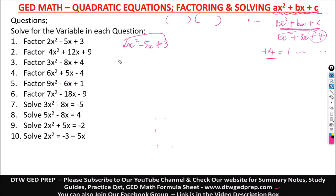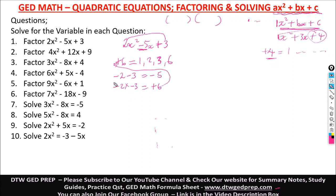The factors of positive 6 are 1, 2, 3, and 6. We need two numbers that when added or subtracted give us negative 5. We can use negative 2 and negative 3 — that gives us negative 5. And if we multiply negative 2 times negative 3, it gives us positive 6. These are the two rules we use to confirm our factors are correct. Once both rules are satisfied, we can go further.